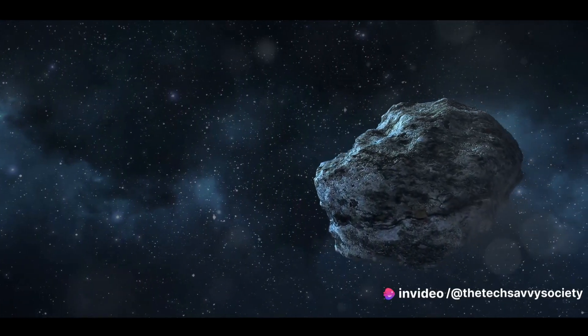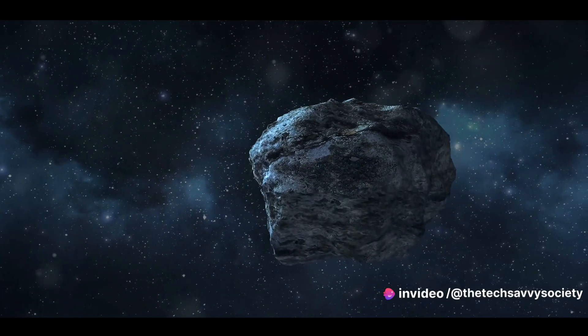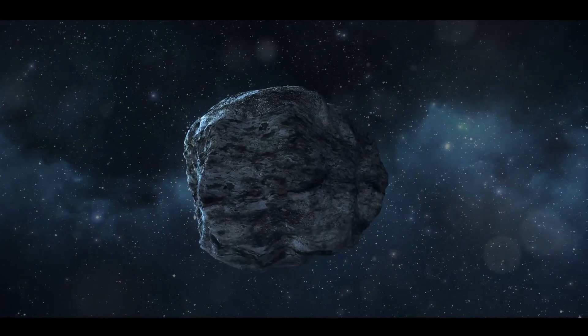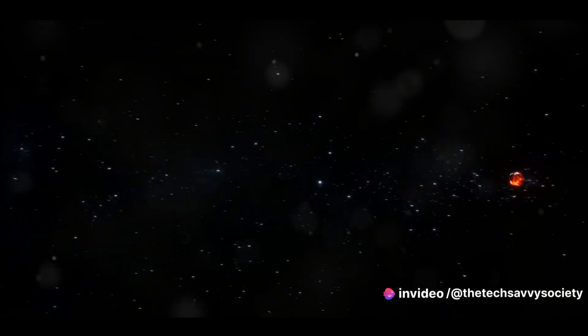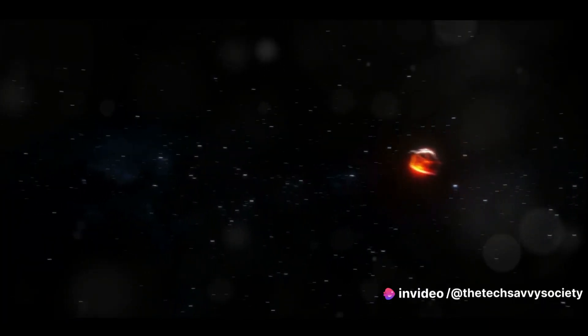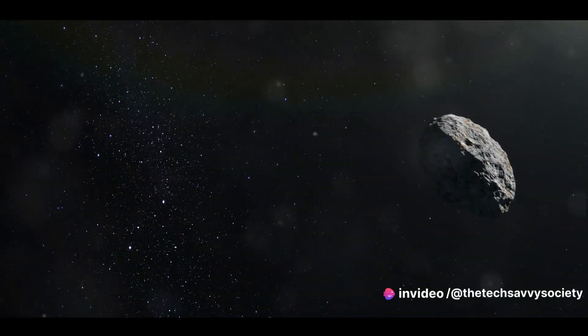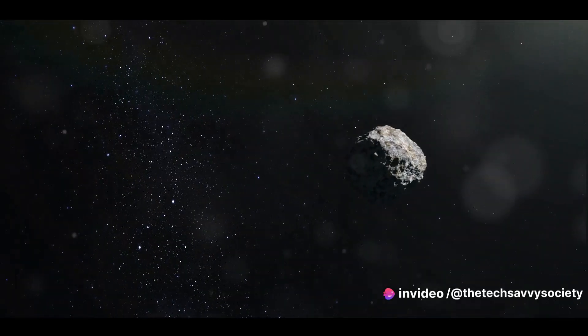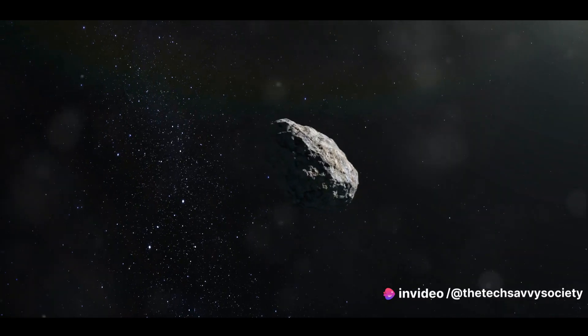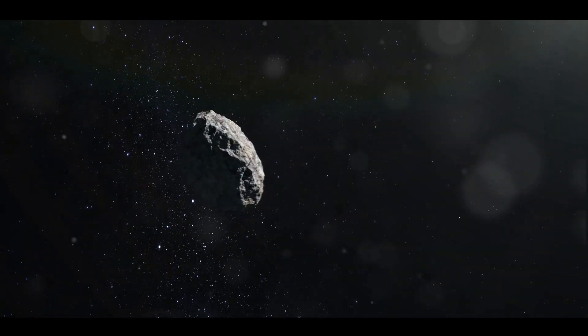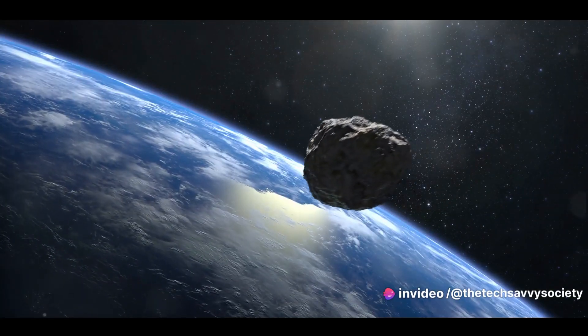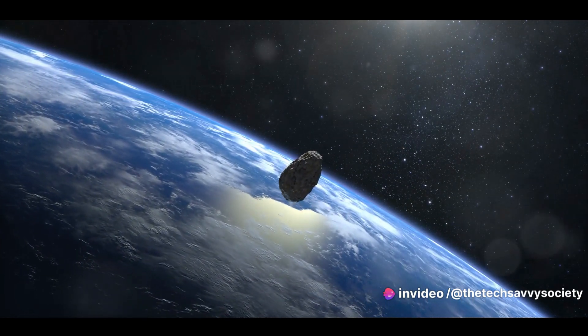But what if we expanded that sphere? If we doubled the surface area of Earth, creating a sphere with a radius of about 9,000 kilometers, we could anticipate twice as many encounters. That's two 4-meter asteroids coming within about 2,600 kilometers of Earth's surface each year. And if we doubled that surface area again, we'd theoretically see four asteroids within about 6,400 kilometers of our planet annually.